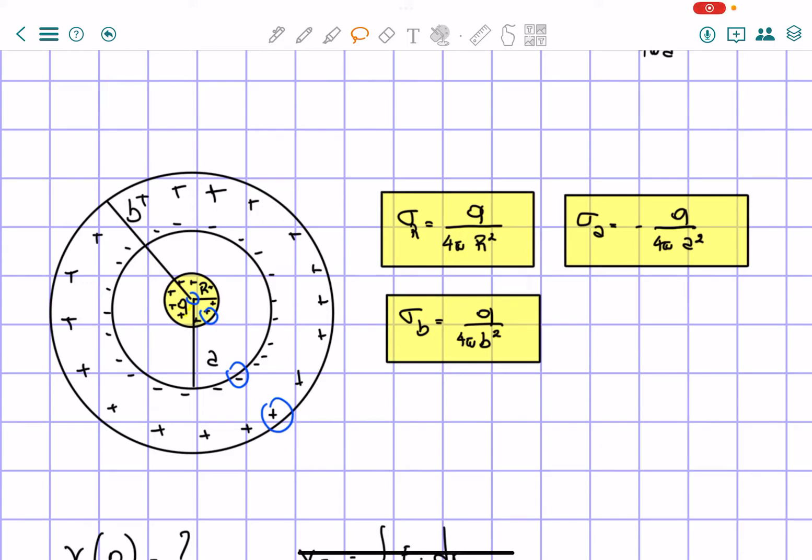So let's do the second part of this problem. We know that we have to find the voltage of the electric potential at point zero, so at the center of this curve.